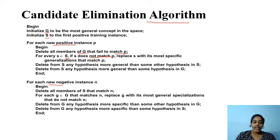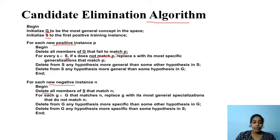When we see a negative instance, we also check both G and S. In S, if there exists some hypothesis that accepts the negative instance, we delete it. If there exists some hypothesis in G that accepts the negative example, we must make changes in G by adding specializations that do not match the negative instance.